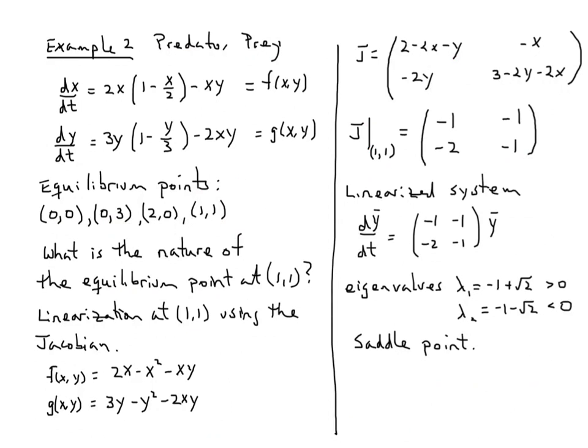...change variables and recompute the whole system. All that's been done for us in the process of computing the Jacobian. So I can compute it at (1,1), my linearized system is this. I find its eigenvalues, and sure enough, one of them is positive and one of them is negative. I have a saddle point.